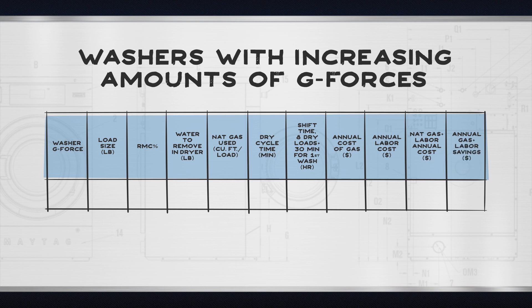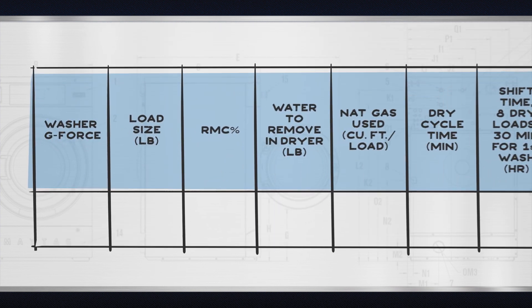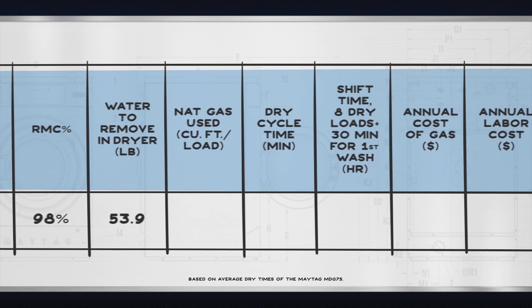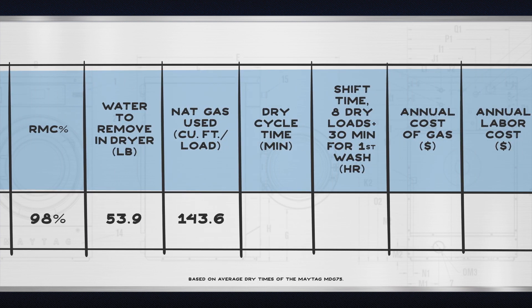If the hotel's washers spin out at 100 g's, 98% of the original dry weight in water is retained at the end of the spin cycle, which means nearly 54 pounds of water still need to be dried. Using our Maytag MDG 75 dryer as a baseline, the dry cycle will take 54 minutes.